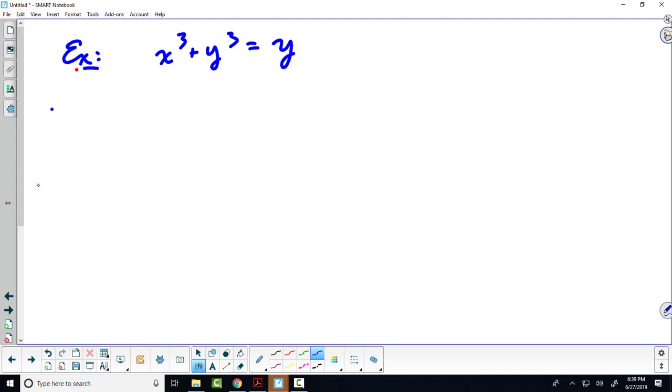What I'd like to do now is find d squared y dx squared, that is, we're going to find the second derivative of this implicit function.